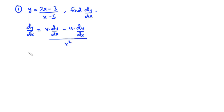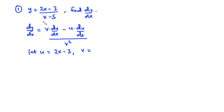From this equation, we let u be the numerator, so u equals 2x minus 3, and we let v be the denominator, that is x minus 5. Now that we have u and v, let's find du/dx and dv/dx.